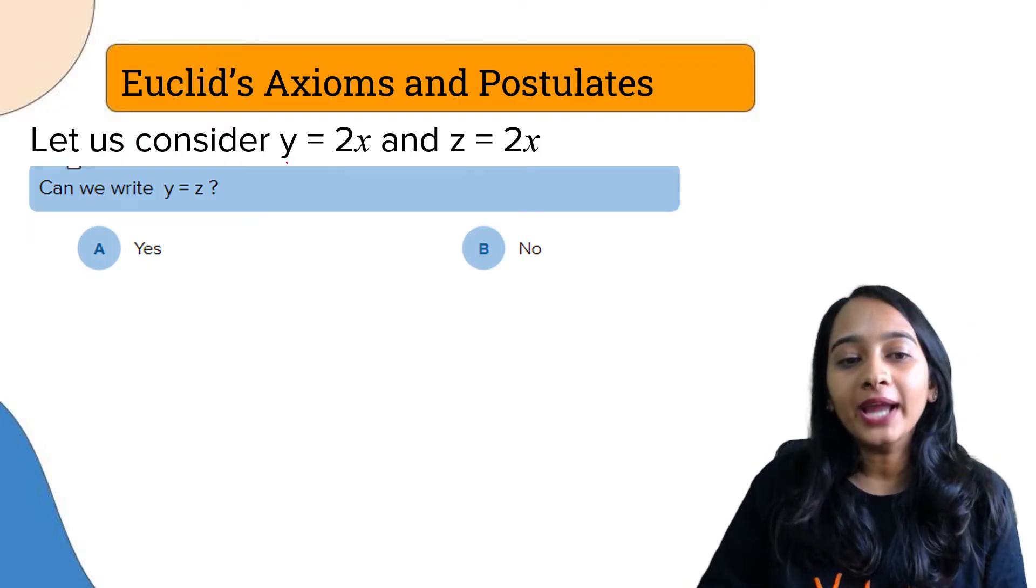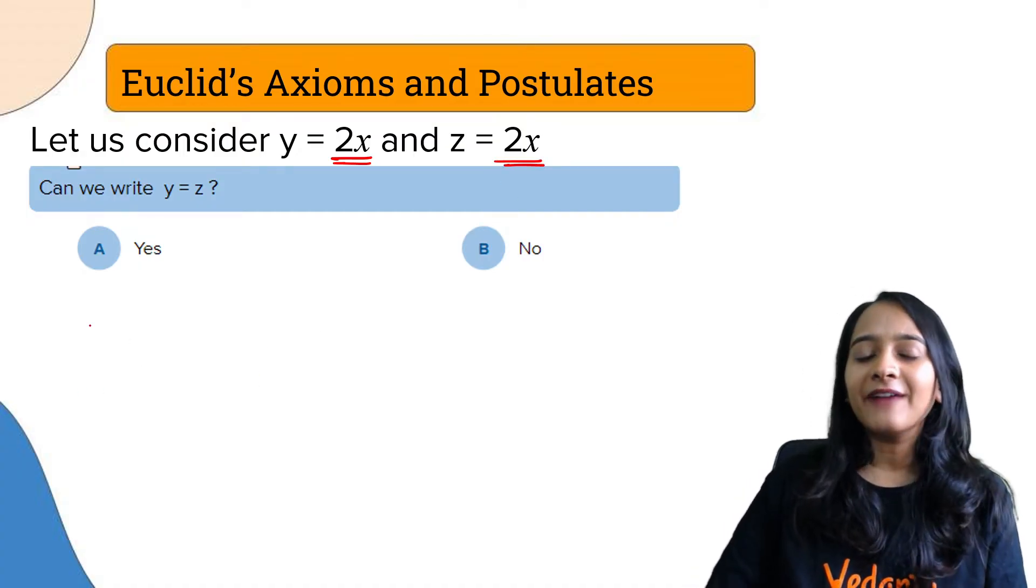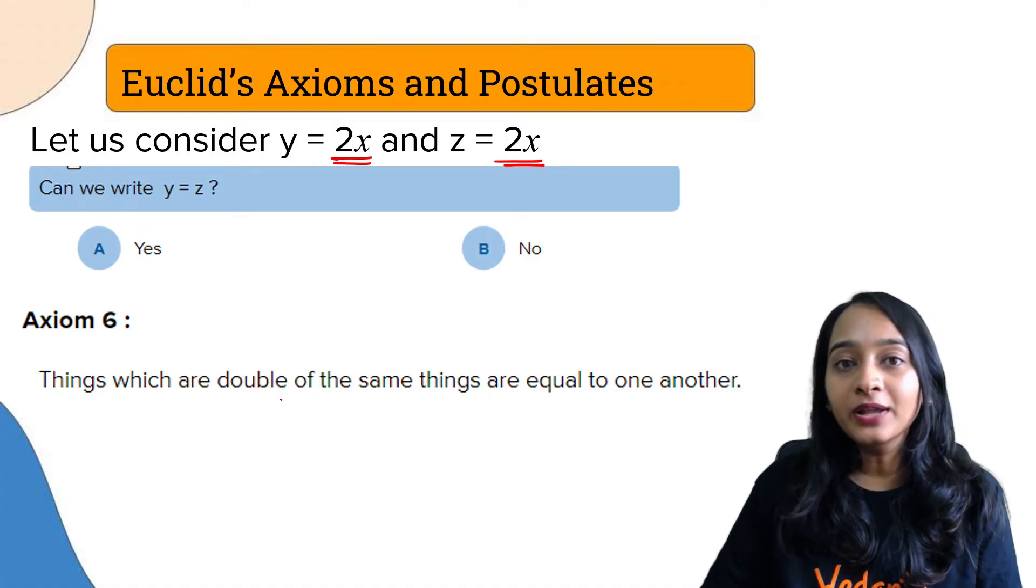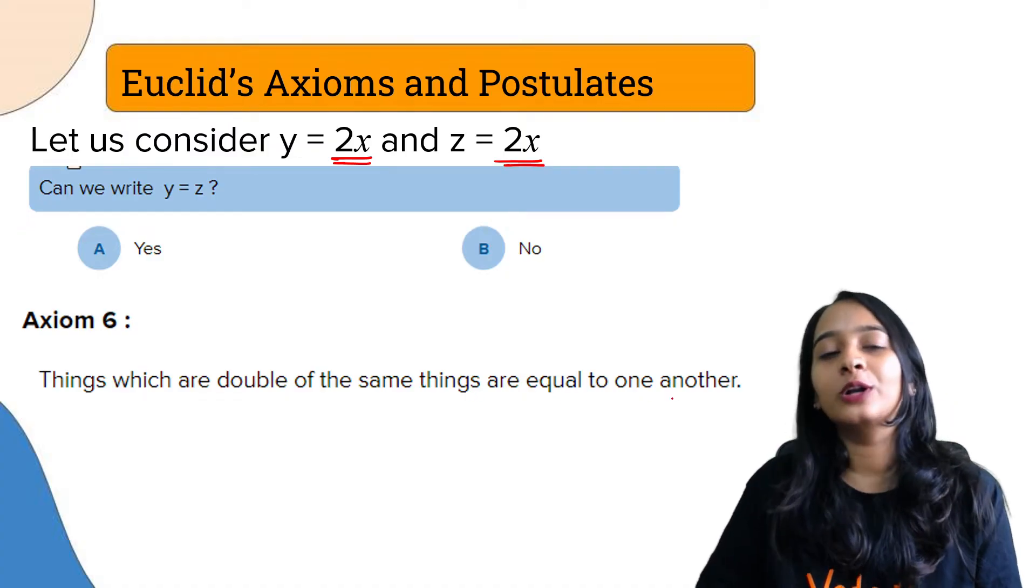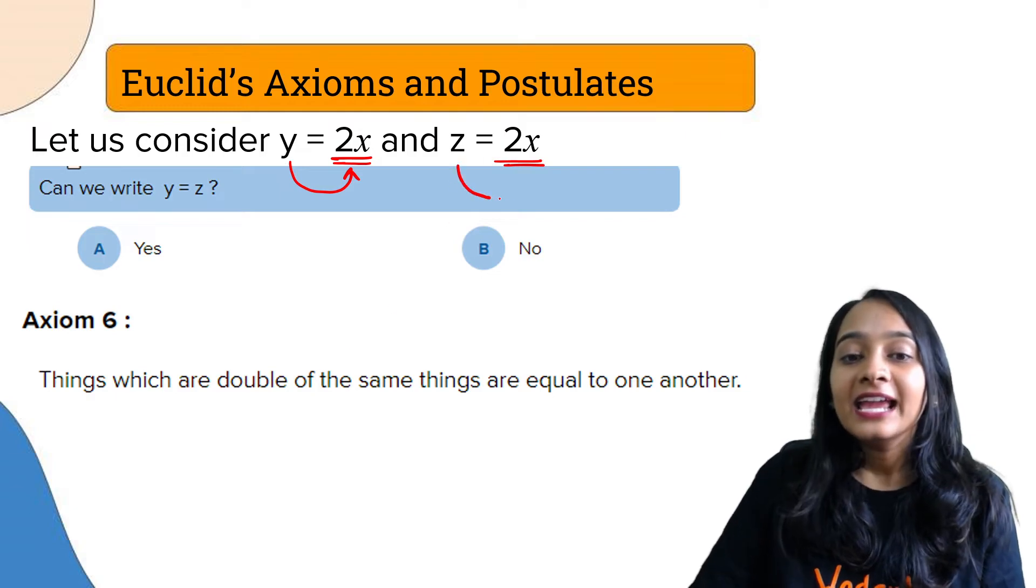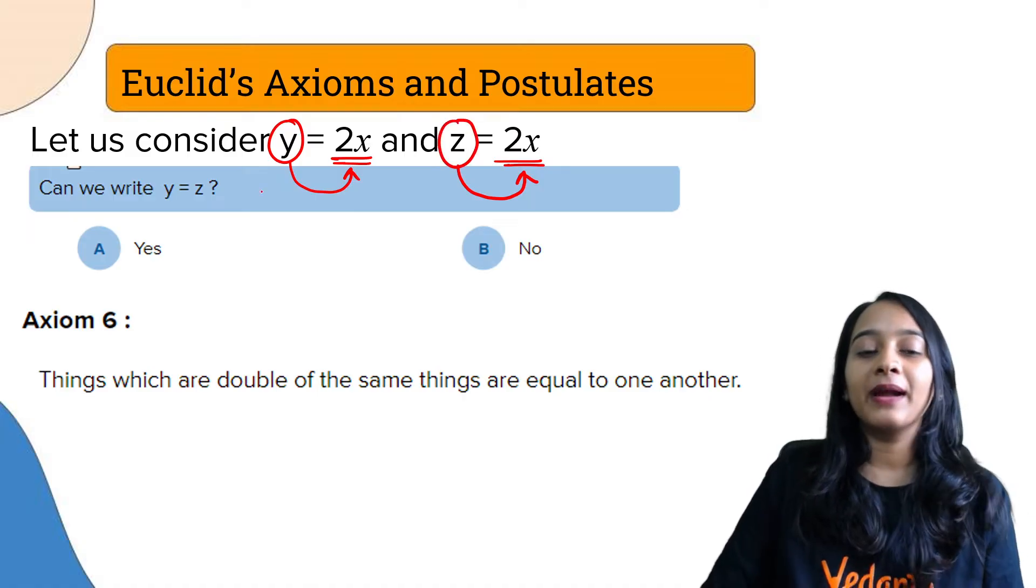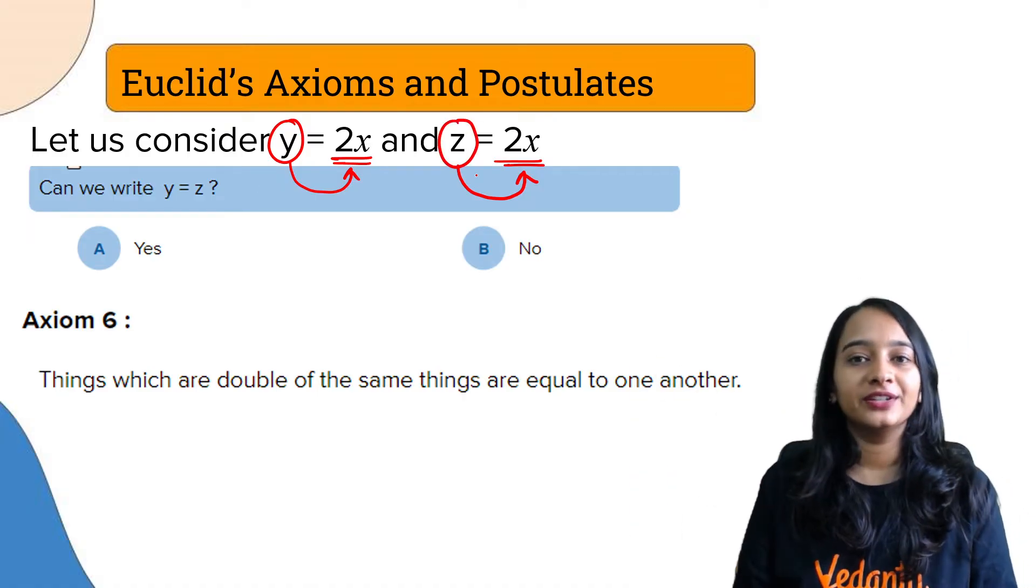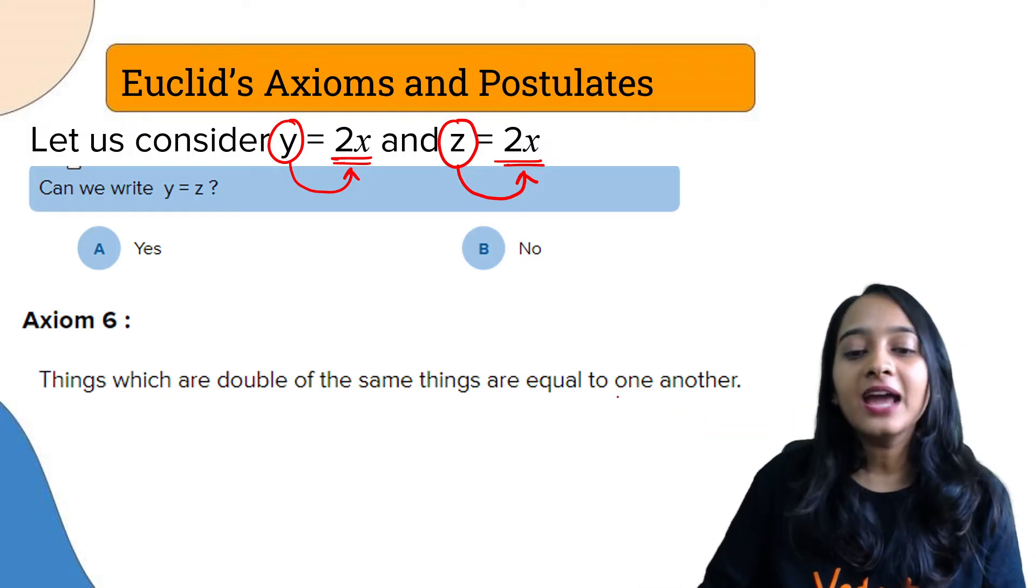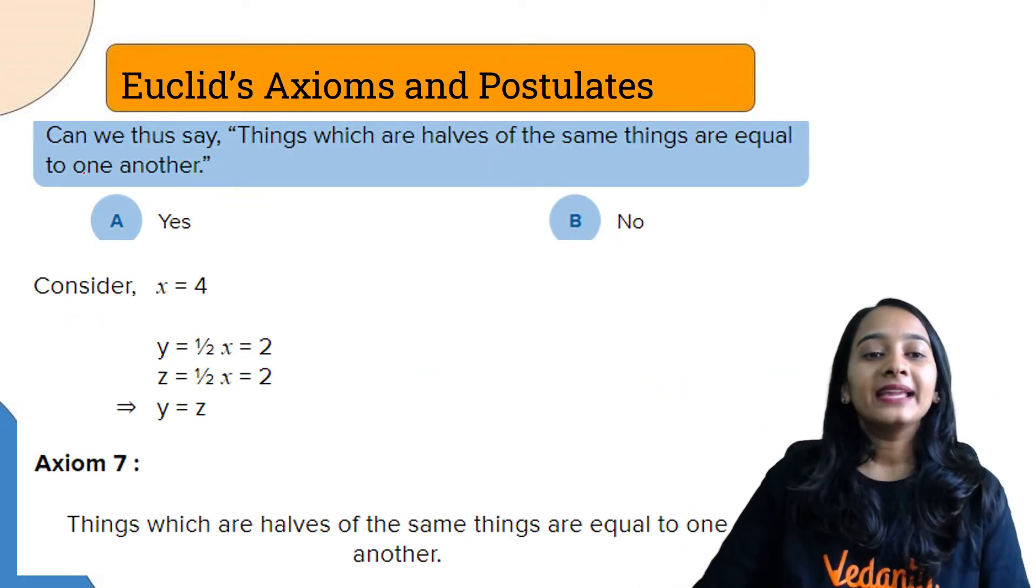Now let us consider Y is equal to 2X and Z is also equal to 2X. So can I say Y is equal to Z? Of course. Things that are double of the same things are equal to one another. Y is double of X, Z is also double of X, so Y and Z are equal to each other. Things which are double of the same thing are equal to one another.